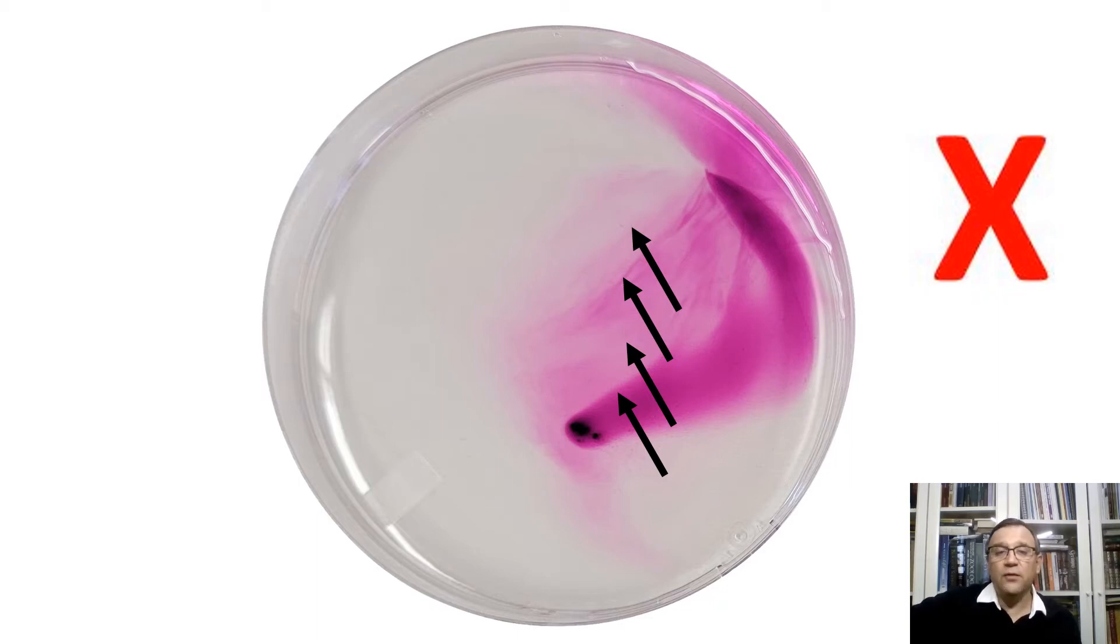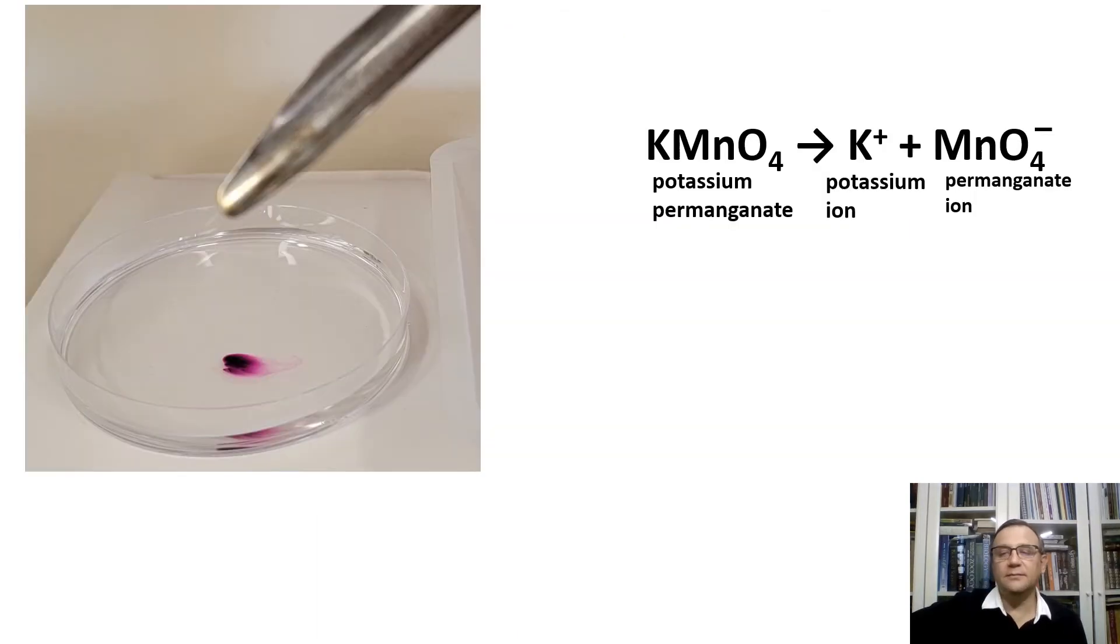When the potassium permanganate crystals are placed in water, they begin to dissolve. When potassium permanganate dissolves in water, it dissociates into potassium ions and permanganate ions. The purple color observed is due to the permanganate ions.